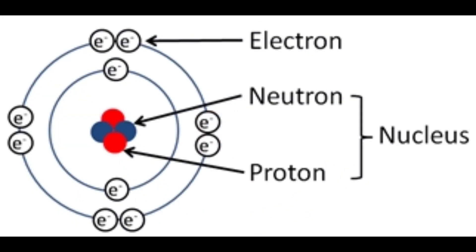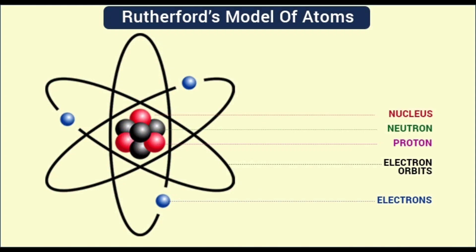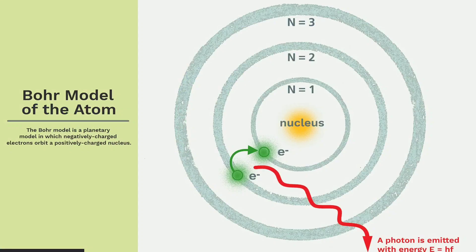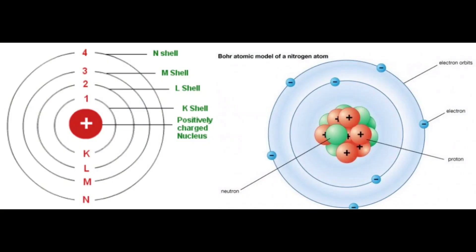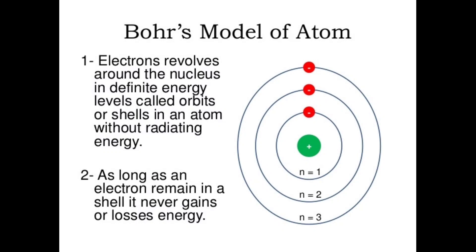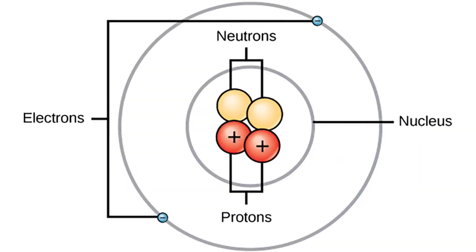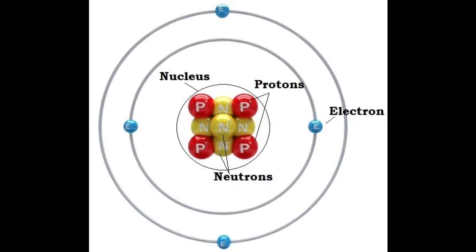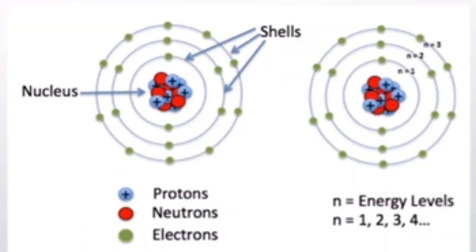Rutherford's model introduced the nuclear model of an atom in which he explained that a nucleus, positively charged, is surrounded by negatively charged electrons. Bohr modified this atomic structure model by explaining that electrons moved in fixed orbitals or shells, and not anywhere in between, and he also explained that each orbit or shell has a fixed energy level.